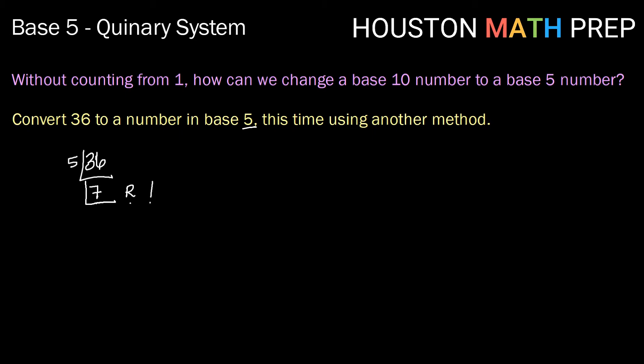I'm then going to repeat that process until I can't anymore. So 5 divided into 7 is 1, with a remainder of 7 minus 5 is 2. Once we're down to a digit here that is less than 5, or less than whatever your base is, then your answer comes from reading your result starting here and moving up your line. So in this case, 121 base 5, just like we got before.